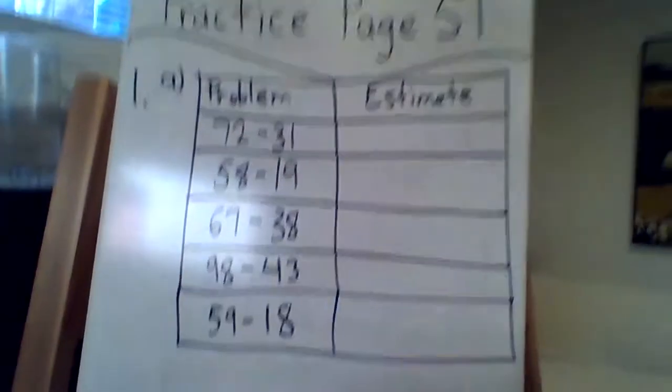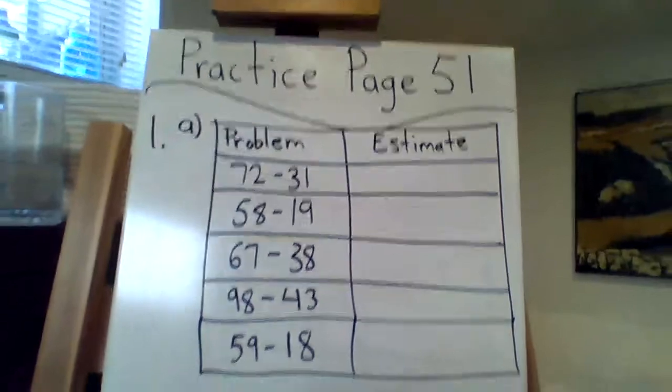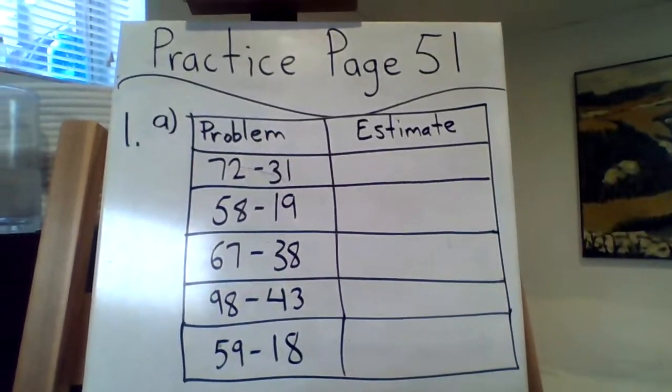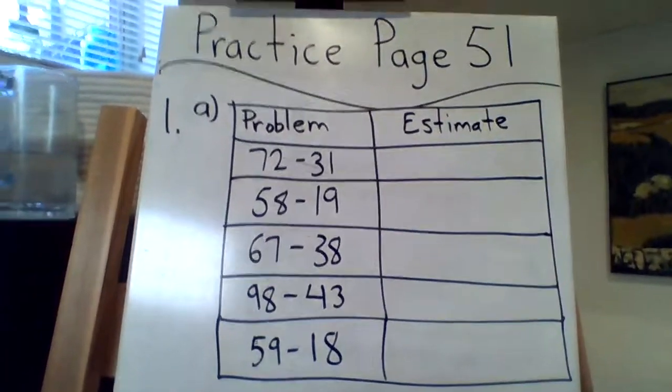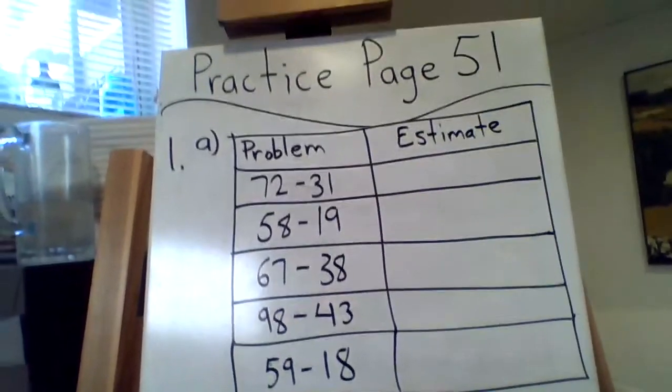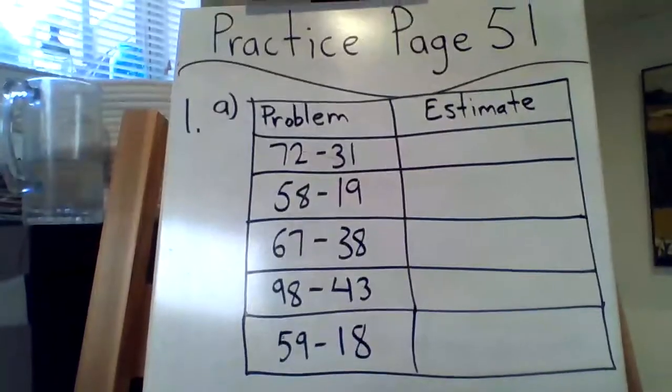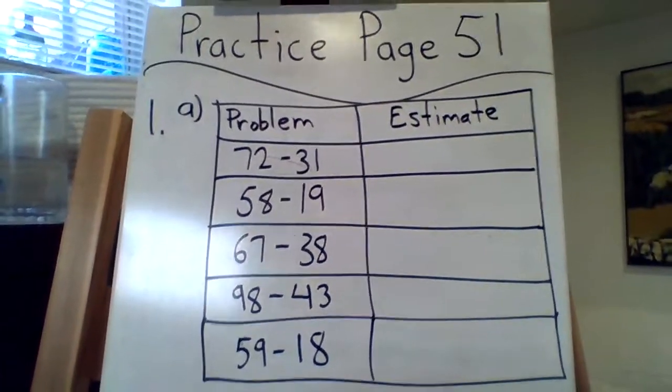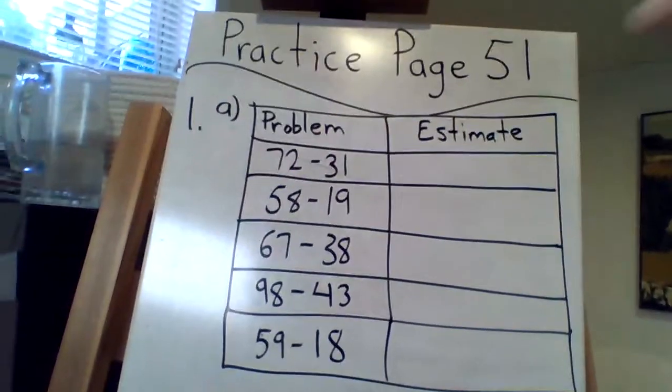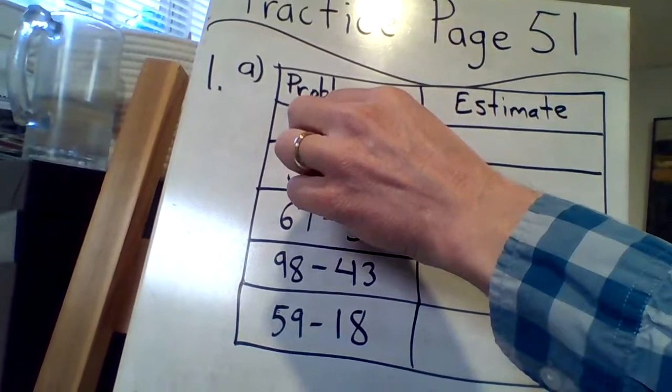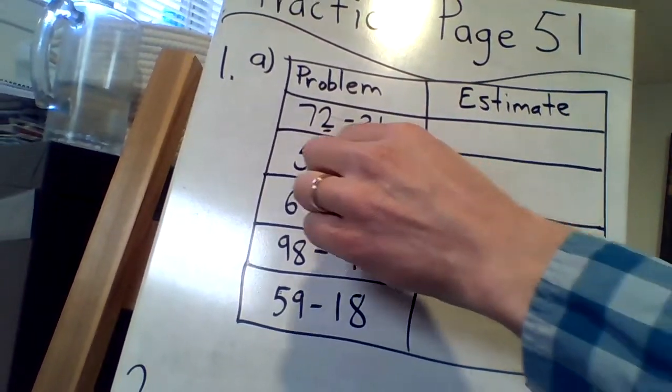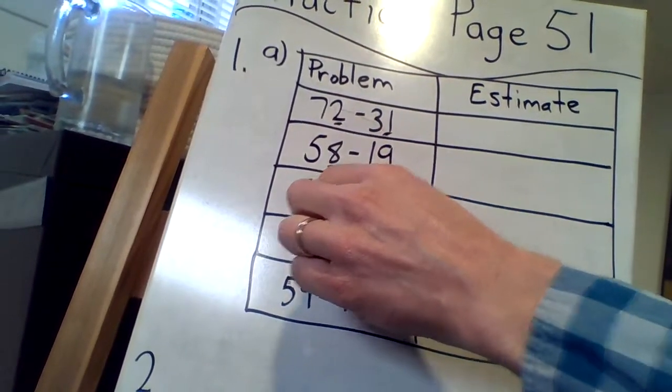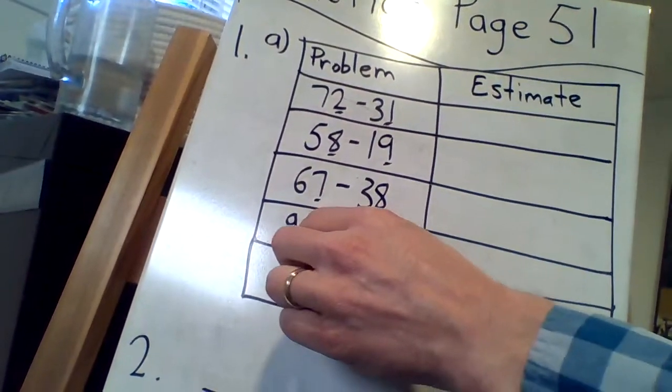We have what looks like a graph here and you need to estimate each difference. You're actually not going to put the difference, you're going to estimate. Remember that's what we're practicing here. So for 1a we have the problem and estimate. All I'm gonna do right off the bat is underline or you could highlight all the digits in the ones place. It's all about the ones place.